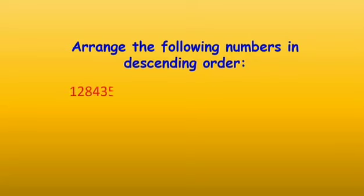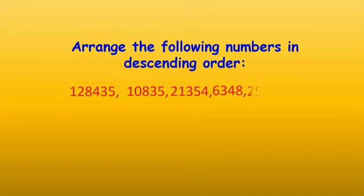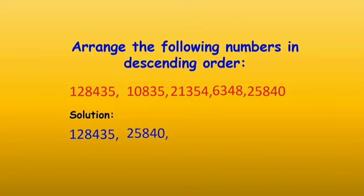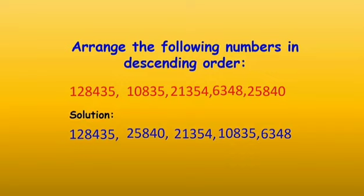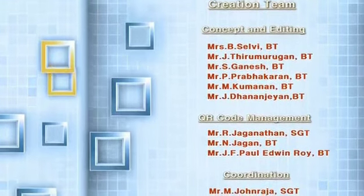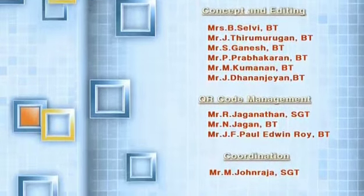For example, arrange the following numbers in descending order: 1,28,435 — 10,835 — 21,354 — 6,348 — 25,840. The answer is: 1,28,435 — 25,840 — 21,354 — 10,835 — 6,348.